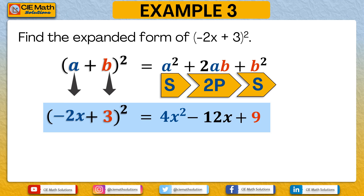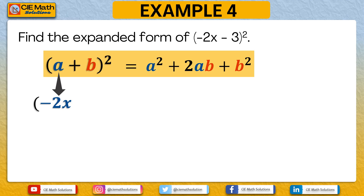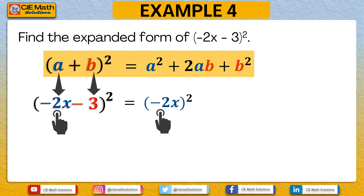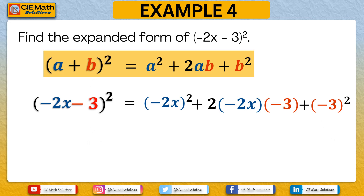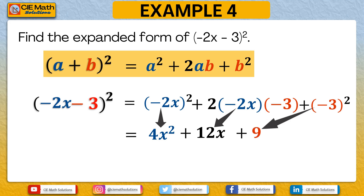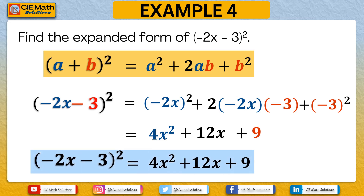Our last example is the expansion of negative 2x minus 3 squared. Following the identity, a is negative 2x and b is negative 3. a squared is negative 2x raised to 2, which equals 4x squared. 2ab is 2 times negative 2x times negative 3, giving 12x. And negative 3 raised to 2 is positive 9. Therefore, negative 2x minus 3 squared equals 4x squared plus 12x plus 9.